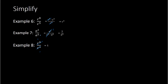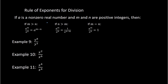When you have variables like this, there's really no need to break it apart because there is a shortcut based on our rule of exponents for division. What we do is simply subtract the exponents. When we divide, we subtract the exponents. So here we have y to the 8th power over y to the 3rd power. We subtract 8 minus 3 to get 5, so this would be y to the 5th power.